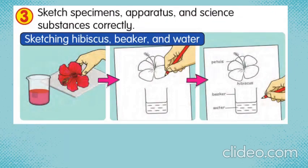Number 3: sketch specimens, apparatus and science substances correctly. For example, sketching a hibiscus, beaker and water. The first step: put the hibiscus in the tray and observe before you sketch. When you start sketching, it must be clear and accurate. Lastly, you should label your sketch. So your sketching must be clear, accurate and labelled — then you will get full marks, students.